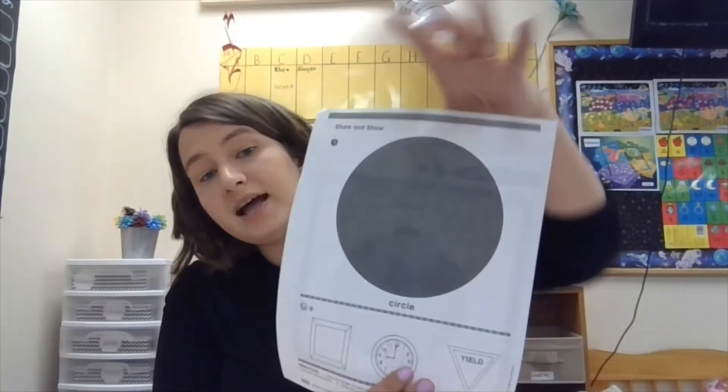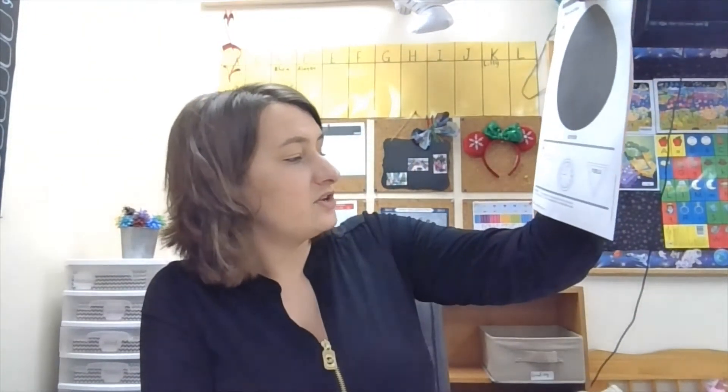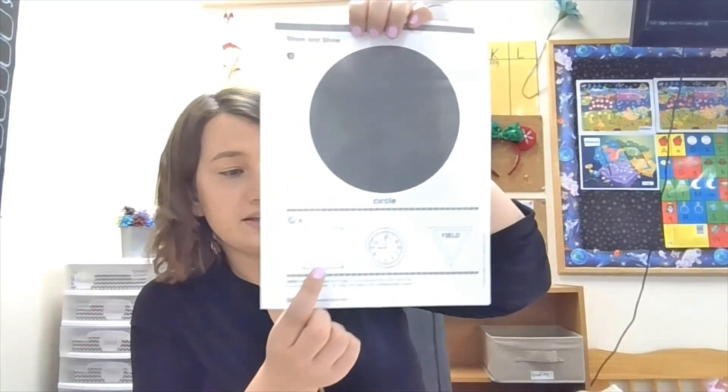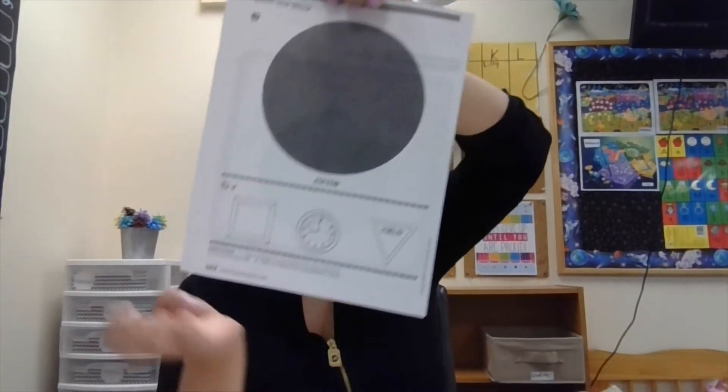What do you see on this side? Another big circle. So go ahead and trace around that circle again. See how it feels? You're always going in a curved motion, never a straight line. Color the object that's shaped like a circle. Is this a circle, is this a circle, or is this a circle? Color the one that's a circle.